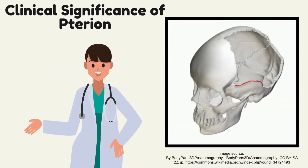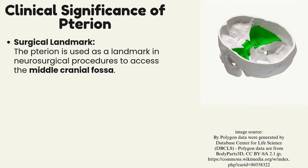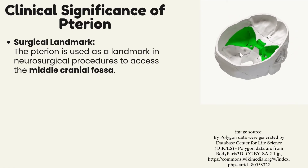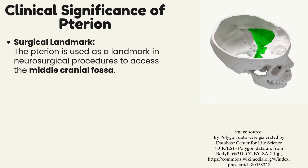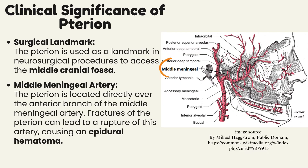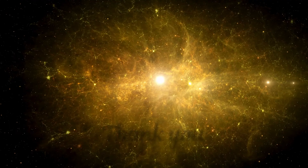What is the clinical significance of the pterion? As a surgical landmark, the pterion is used as a landmark in neurosurgical procedures to access the middle cranial fossa. Regarding the middle meningeal artery, the pterion is located directly over the anterior branch of the middle meningeal artery. Fractures of the pterion can lead to rupture of this artery, causing an epidural hematoma.